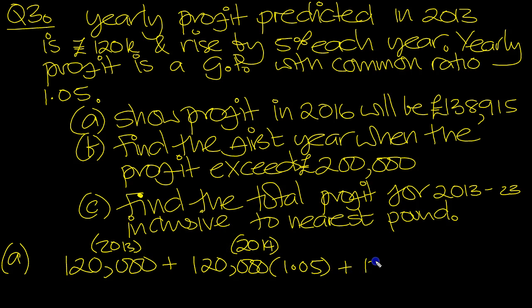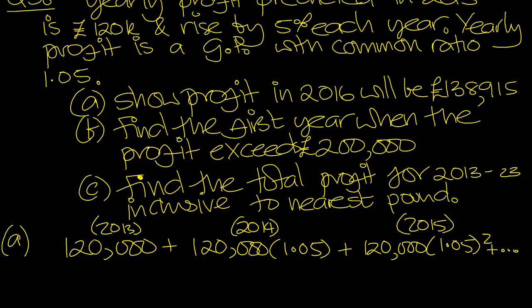And then the next year after that, £120,000 times the 1.05 squared this time. And that's 2015. And the sequence continues in that same fashion. So there it is there.